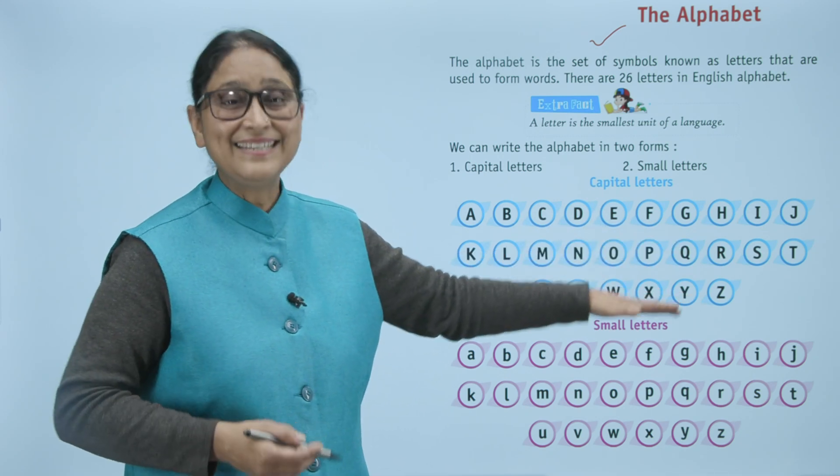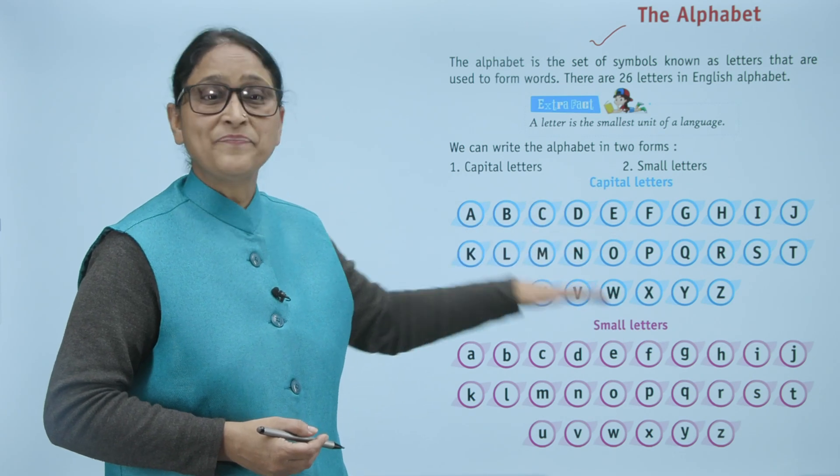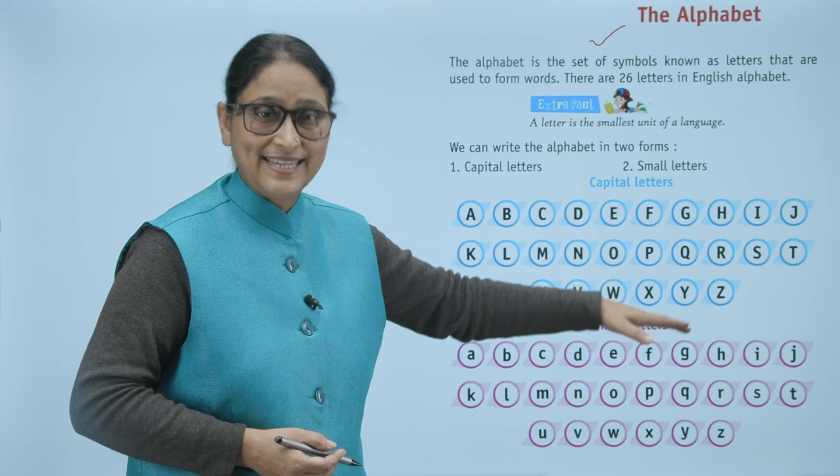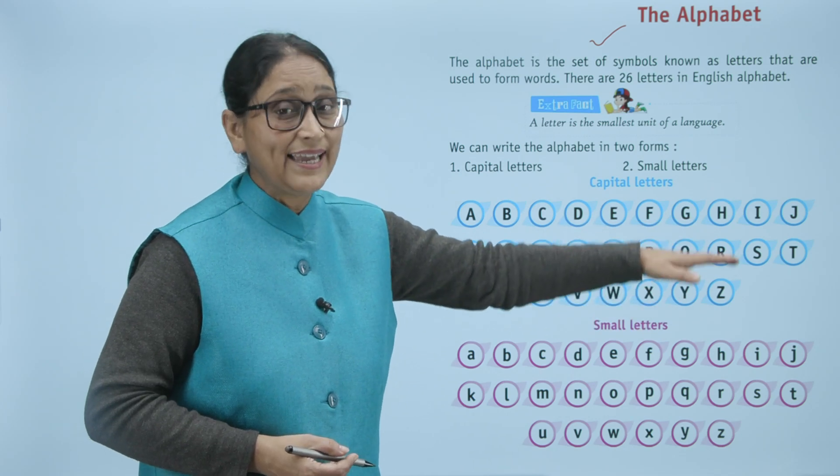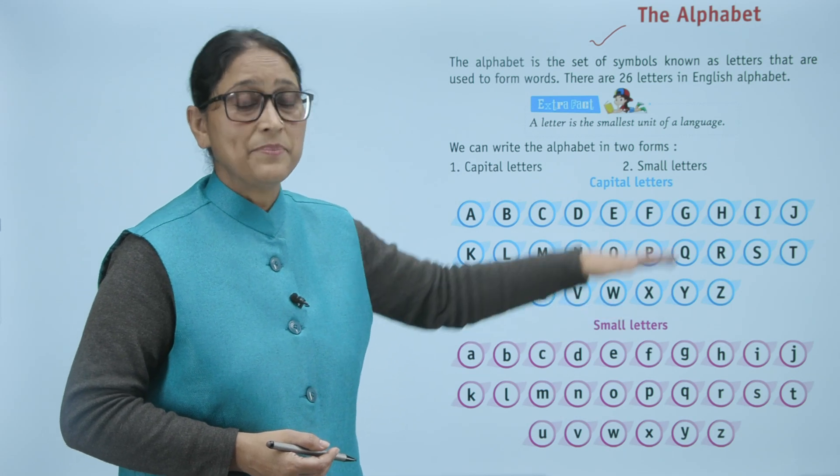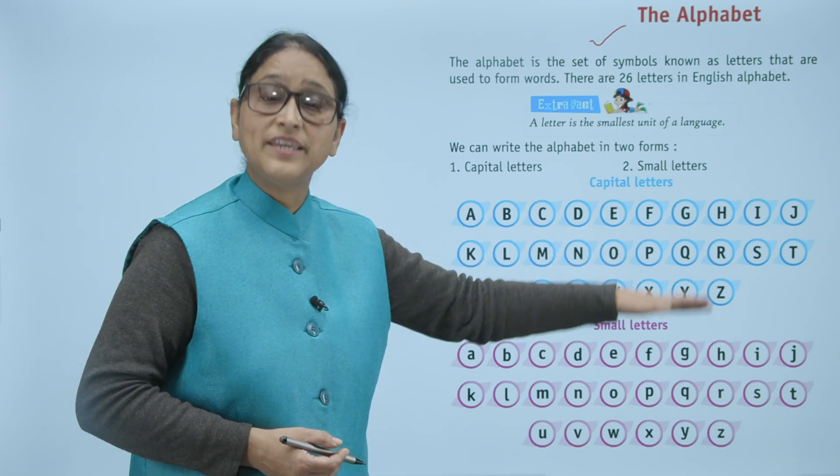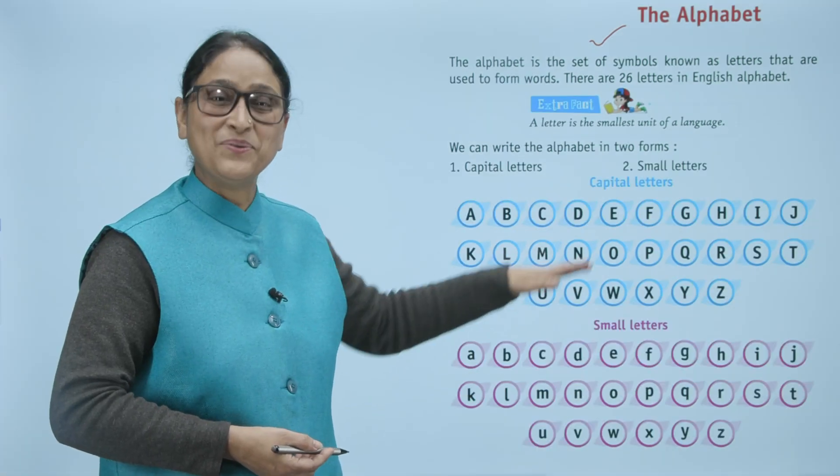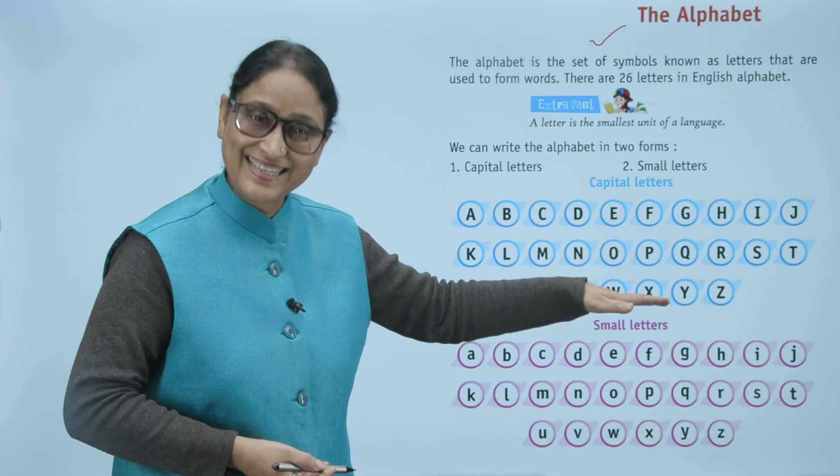Now the small letters: a, b, c, d, e, f, g, h, i, j, k, l, m, n, o, p, q, r, s, t, u, v, w, x, y, z.